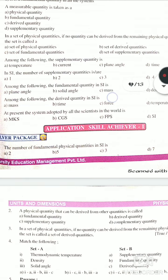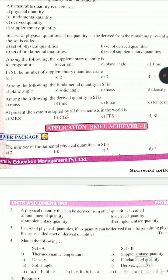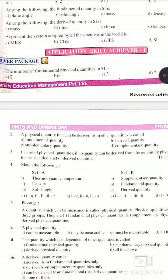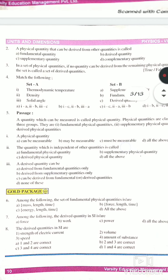At present, the system adopted by all scientists in the world is SI. The number of fundamental physical quantities in SI is seven. A physical quantity that can be derived from other quantities is called a derived quantity. In a set of physical quantities, if no quantity can be derived from the remaining quantities, the set is called a set of fundamental quantities — not derived quantity.